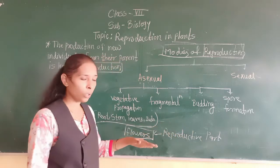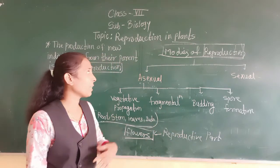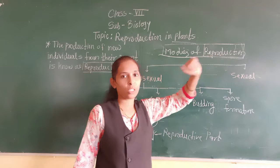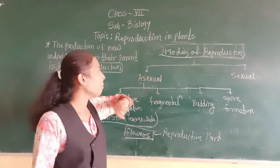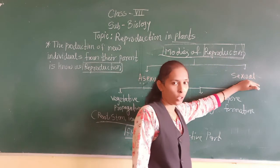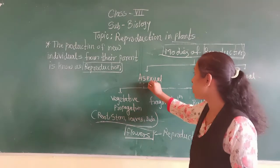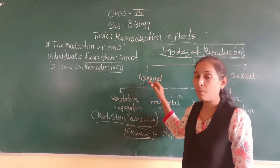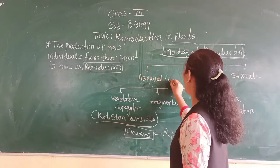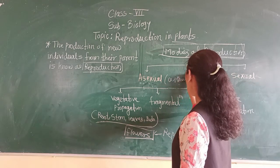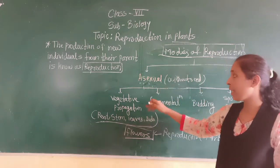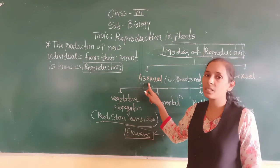According to that, plants are basically divided into two categories on the basis of modes of reproduction. There are some plants which get reproduced asexually, whereas others get reproduced sexually. The plants which can be reproduced without the use of seeds — that type of reproduction is called asexual reproduction.